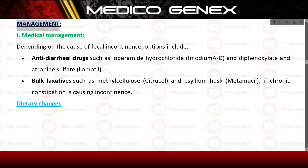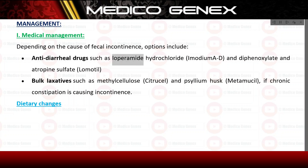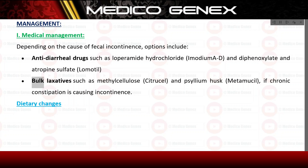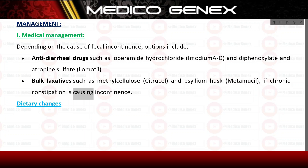Management — medical management. Depending on the cause of fecal incontinence, options include antidiarrheal drugs such as loperamide hydrochloride (Imodium) and diphenoxylate and atropine sulfate (Lomotil), and bulk laxatives such as methylcellulose (Citrucel) and psyllium husk (Metamucil) if chronic constipation is causing incontinence.